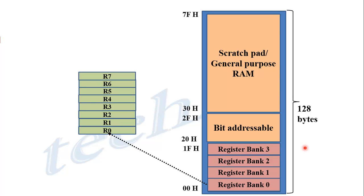Register bank 0 has eight registers, R0 to R7. Each register has its own address. For example, R0 has the address 00H, R1 has the address 01H, and similarly R7 has the address 07H. Each register can be accessed either by its name or by its address. For example, R0 can be accessed using the name R0 or by using its address 00H. Similarly, R7 can be accessed by its name R7 or by its address 07H.